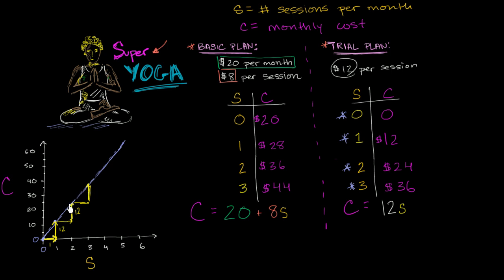If you take away a session, you'll go down 12. So it's a way of thinking about how steep this line is. Every time you go one to the right, you're going 12 up.